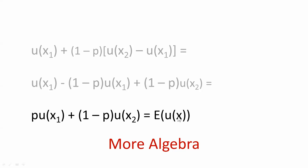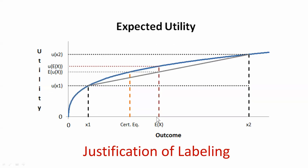So what we've shown is that the diagram actually does produce what was claimed: going up from the expectation of x to the chord, that total length is the expectation of u(x). And that's all there is to it.